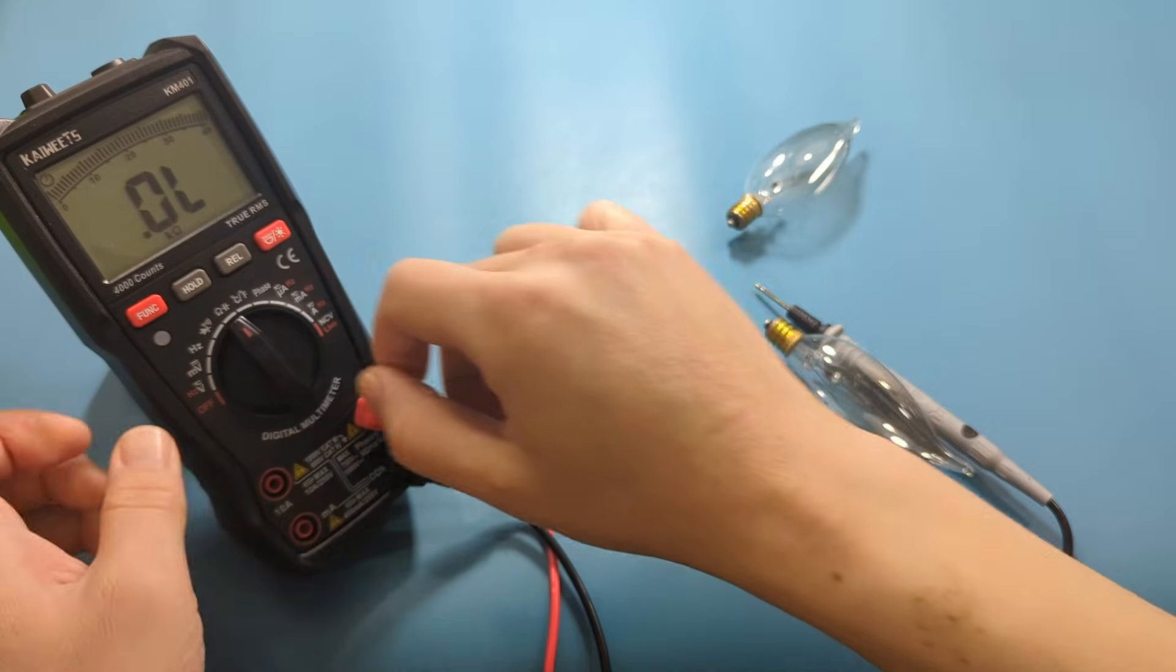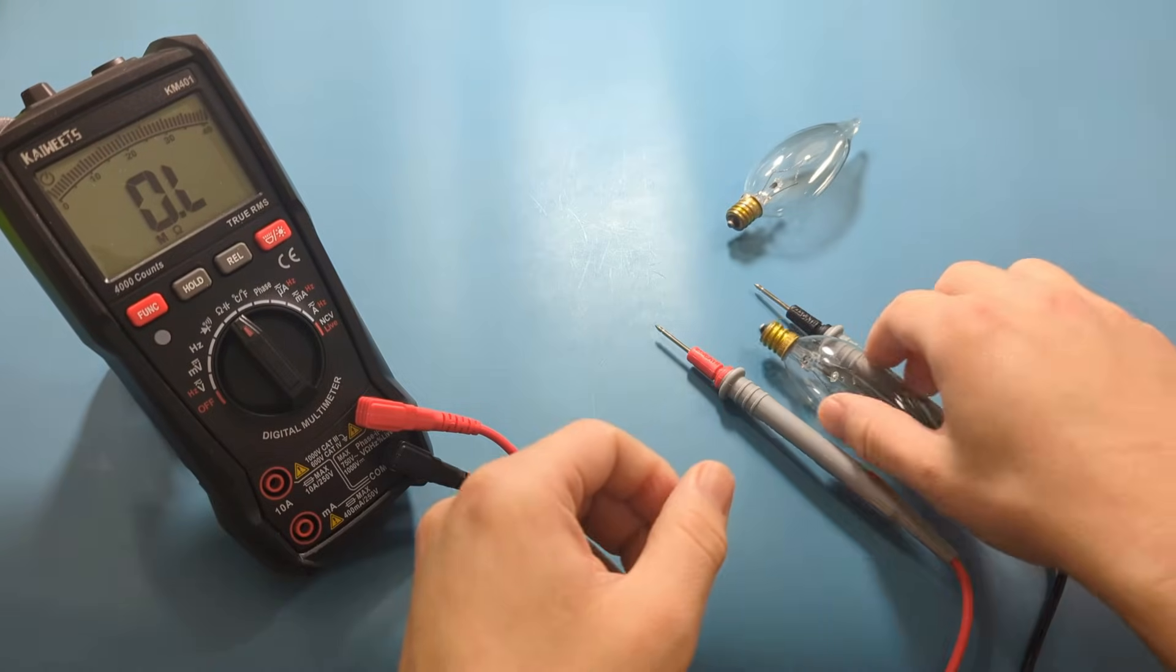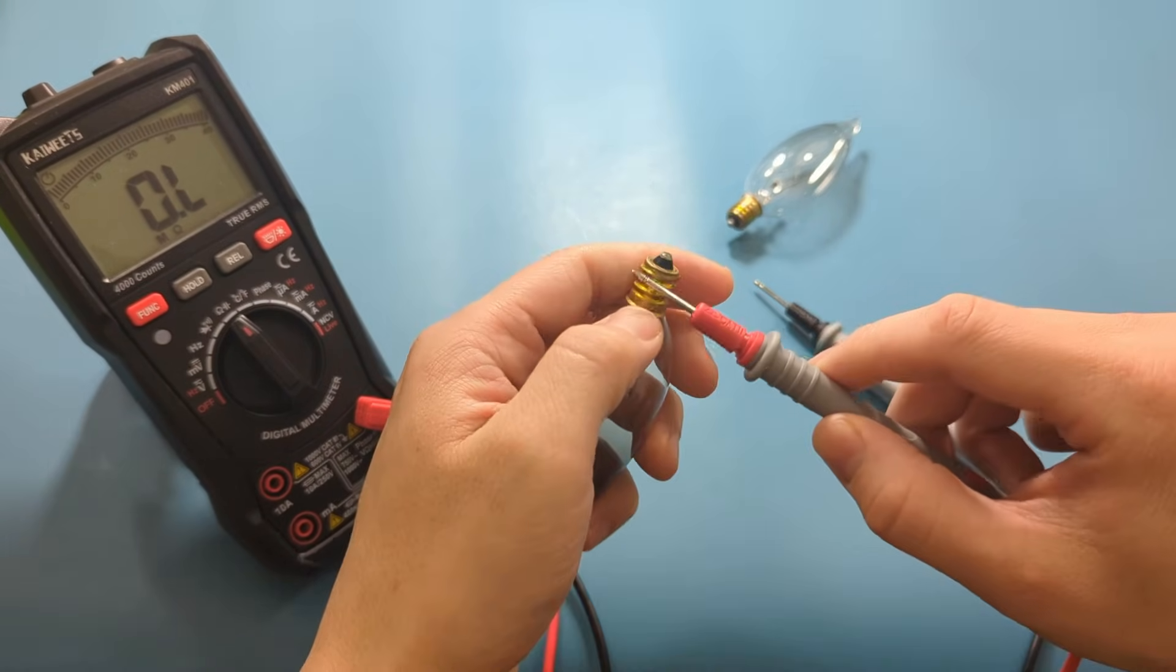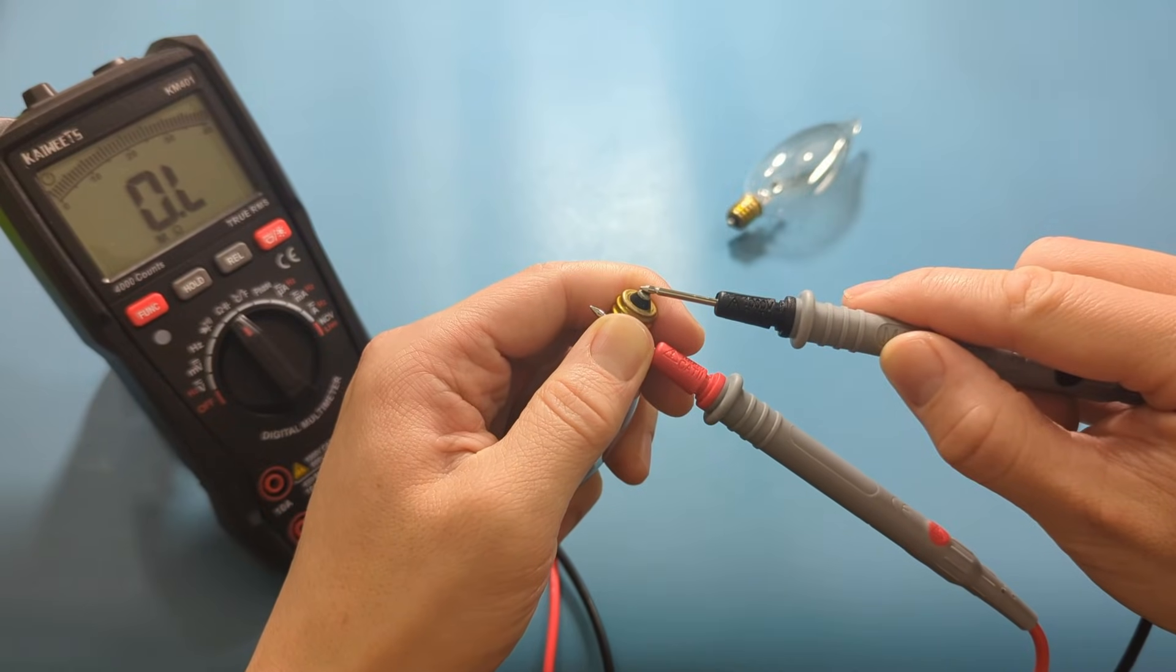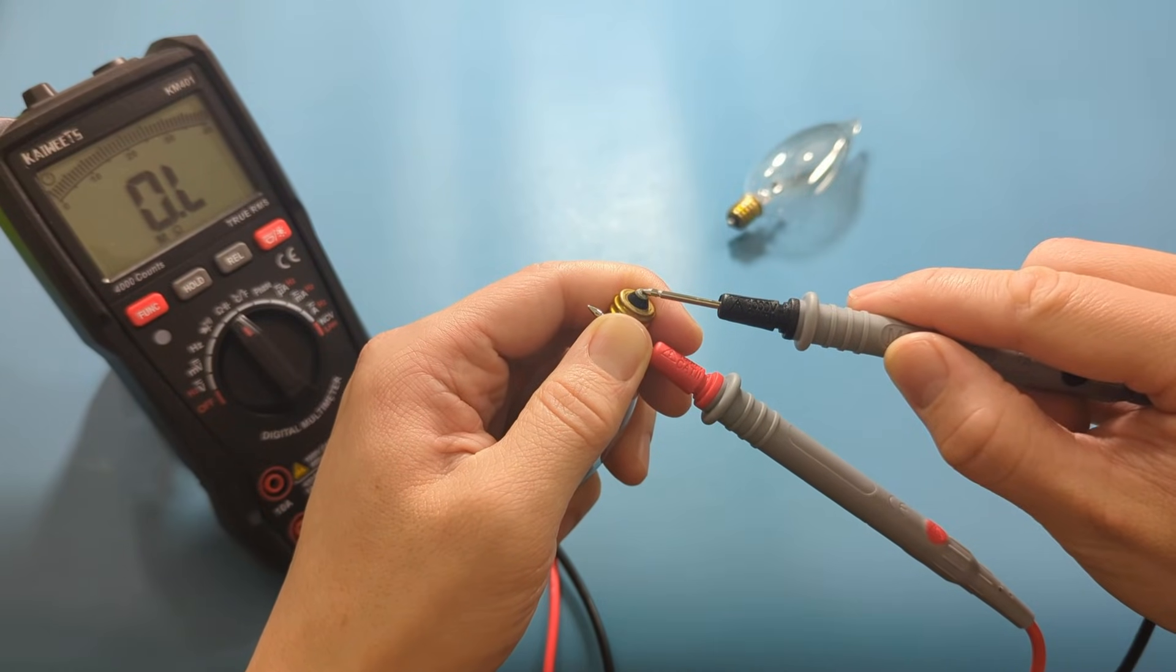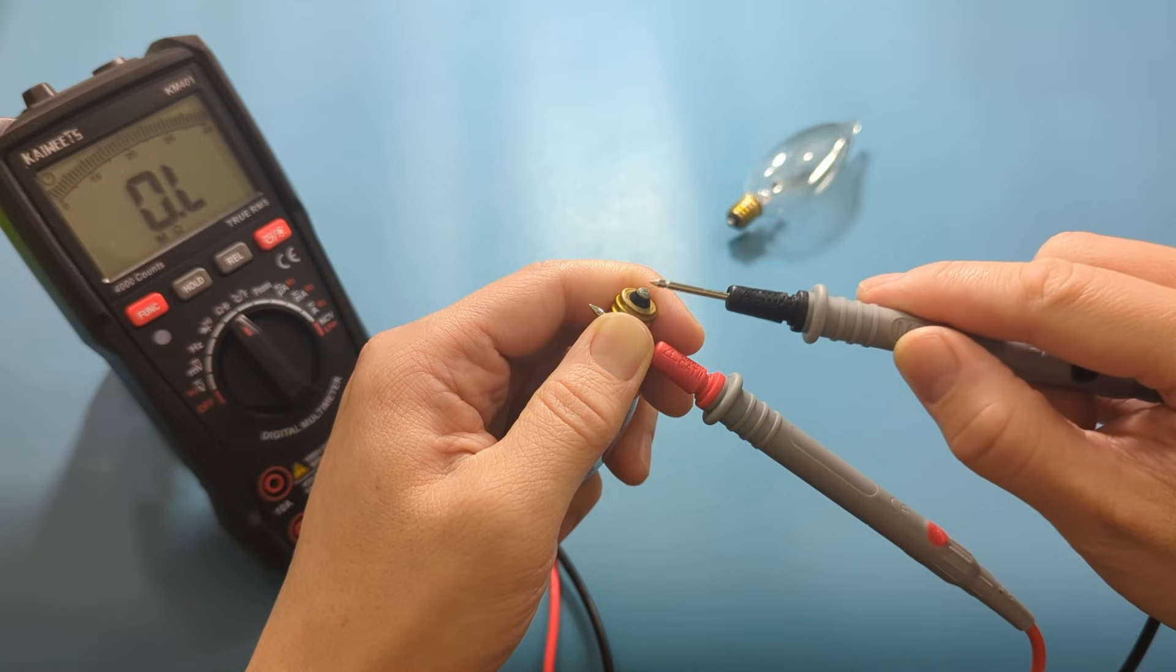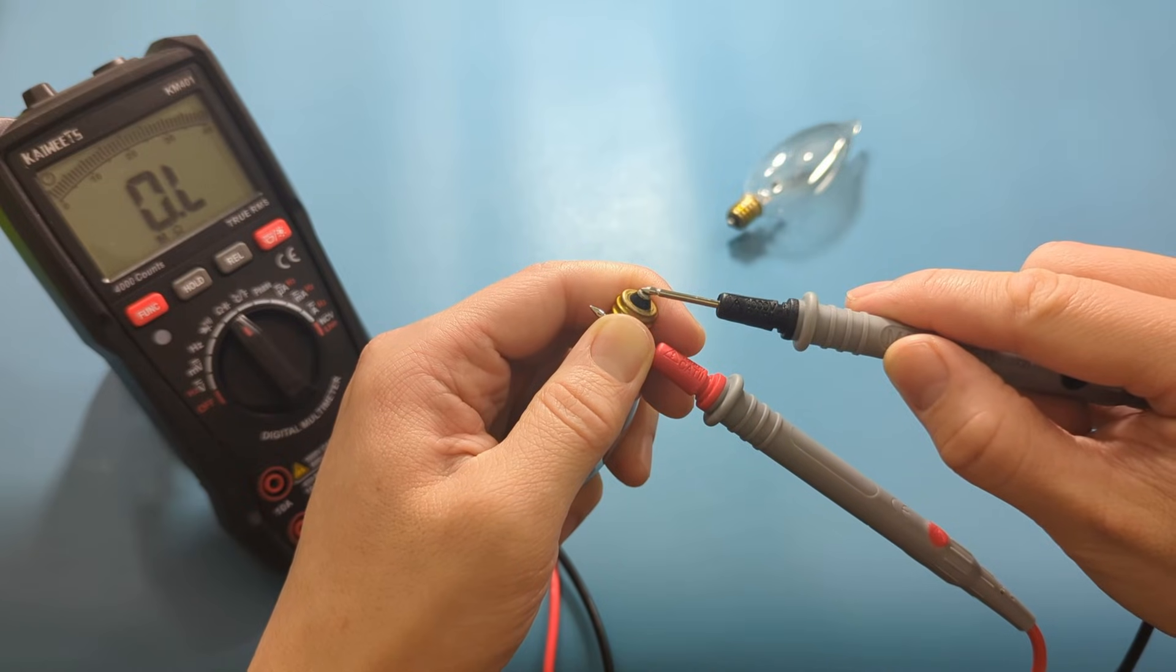To confirm this is a bad bulb, let's check the resistance. As we expected, we're getting OL or overload for the resistance. We have confirmed this is a bad bulb.